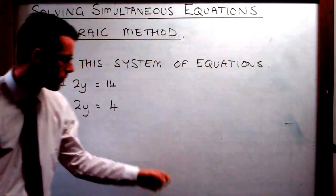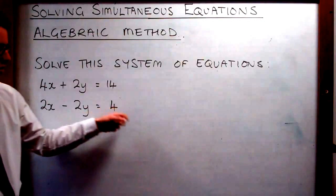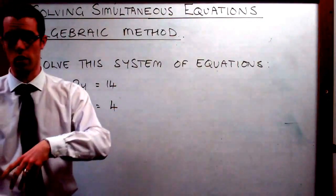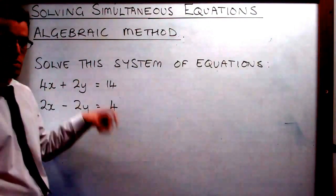So the question is solve this system of equations and we've got 4x plus 2y is 14 and 2x minus 2y is 4. So we can't solve just using our traditional algebra methods because we've got two unknowns, we've got y and x. We've also got two equations.